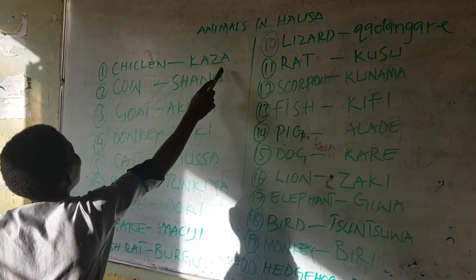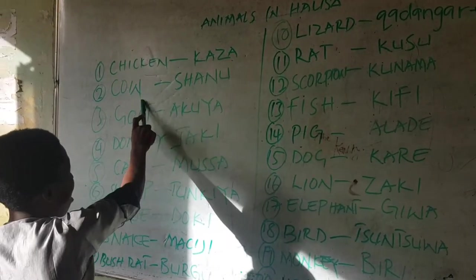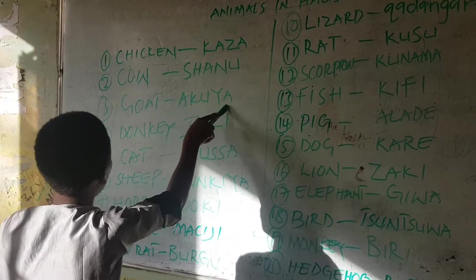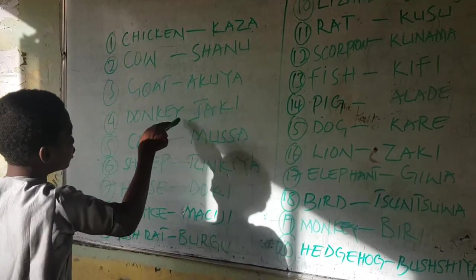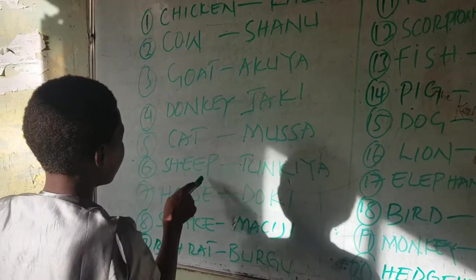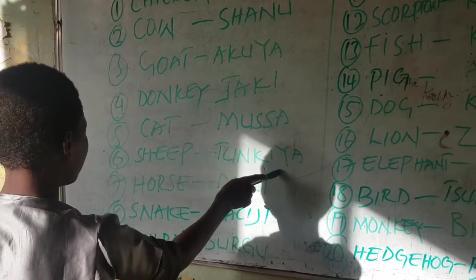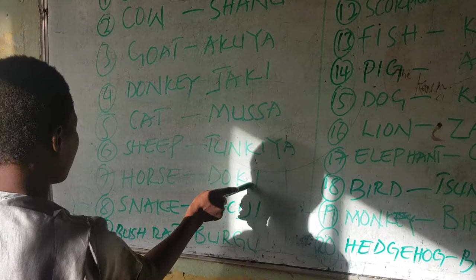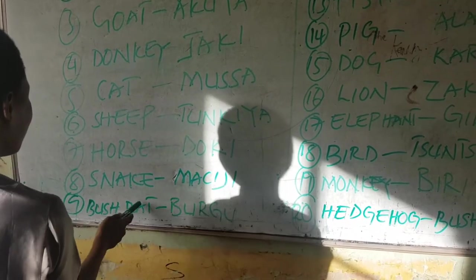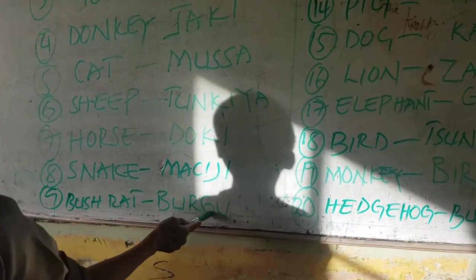Chicken, kaza. Cow, shanu. Goat, aquya. Donkey, jaki. Cat, musa. Sheep, tunkia. Horse, doki. Snake, machiji. Bushrat, burgu.